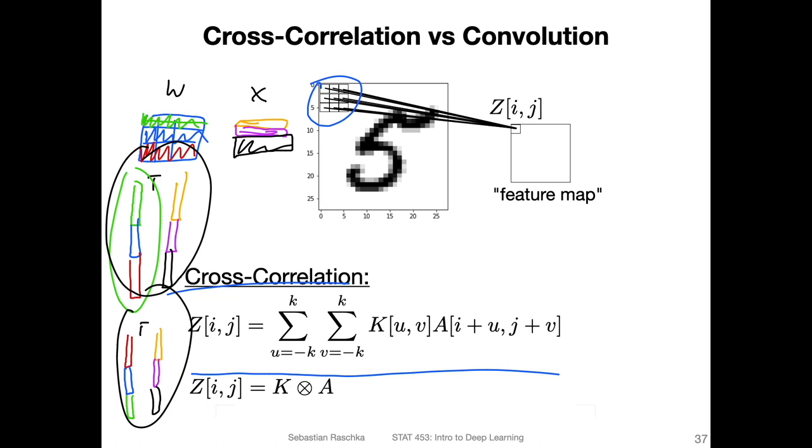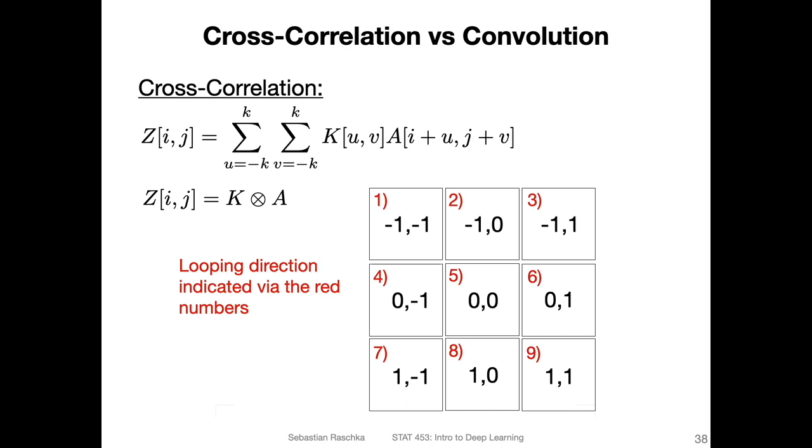That is mainly the difference between cross-correlation and convolution, the way we do the multiplication in which order. Here, this is like the way we do the cross-correlation. It's maybe hard to see in this formula.